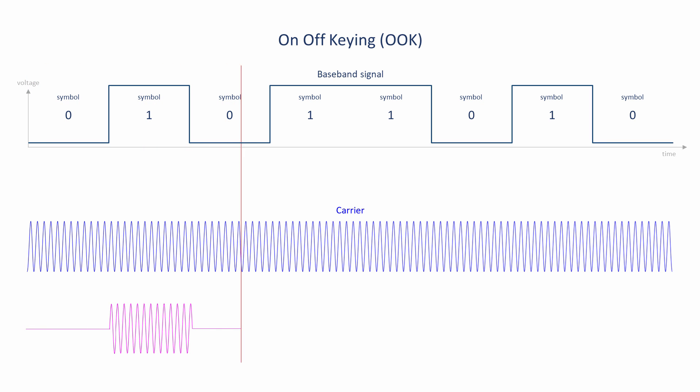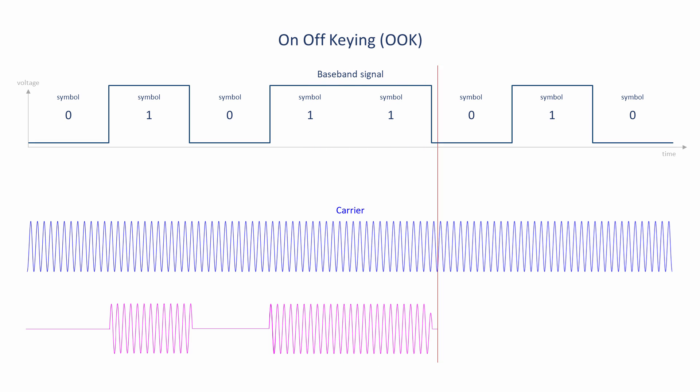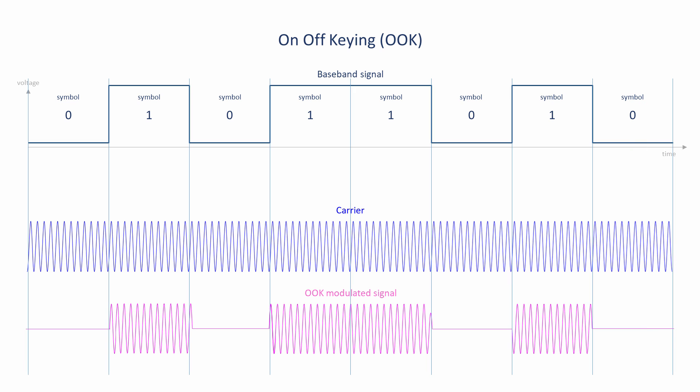Then, one symbol at a time, the data are encoded on the carrier by simply turning it on and off, with little more than a switch, rather like Marconi did in 1897.